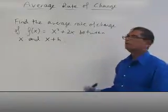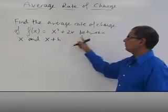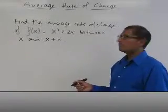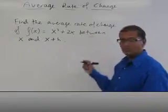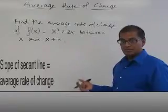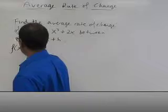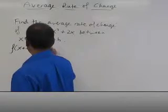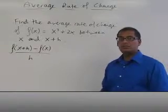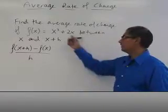Suppose we want to find the average rate of change of the function f of x equals x squared plus 2x between x and x plus h. Now this is the same as if you were asked to find the slope of the secant line. The slope of the secant line and average rate of change are the same thing. So remember, we're going to use our formula f of x plus h minus f of x over h. And you're not given any particular number. We're just going to find a general formula for the slope of that line or the average rate of change for this function.